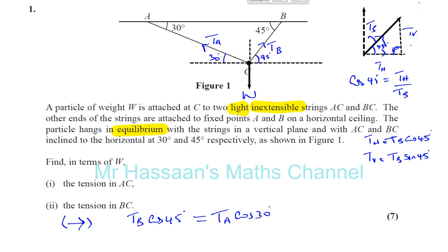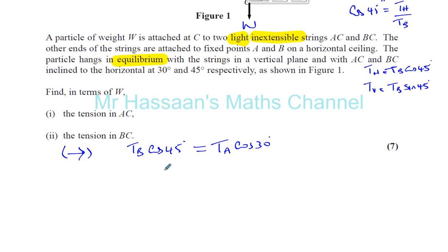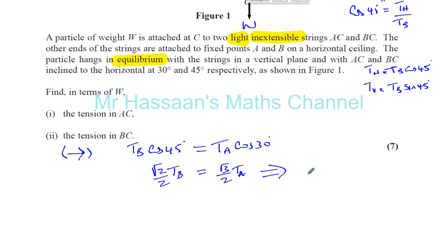We can simplify this: cosine 45 is √2/2 and cosine 30 is √3/2. Multiplying both sides by 2, we get √2·TB = √3·TA. That's equation 1. Let's now make another equation by resolving vertically.